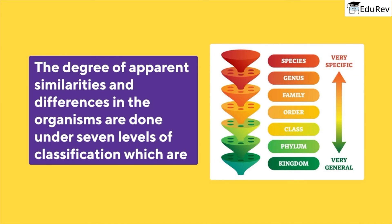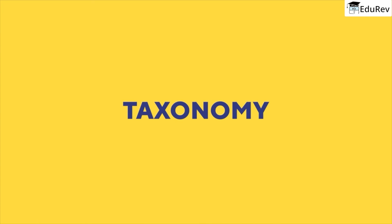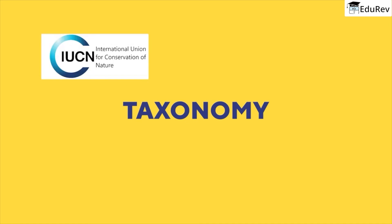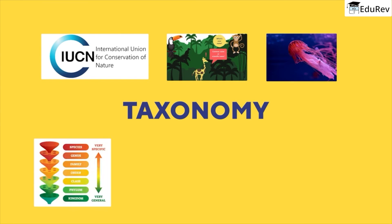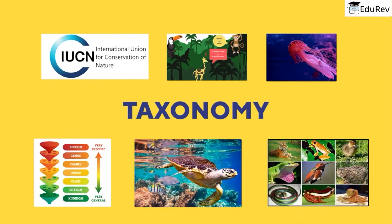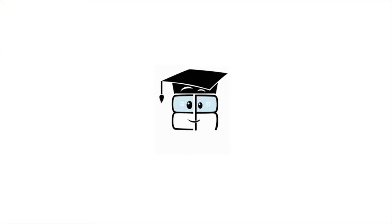With this, we come to an end of our video. Let's recap what all we learned. We started with why we need to study taxonomy. We learned about what we need to study under taxonomy, i.e., identification, nomenclature, and classification. I hope you understood this topic. You can learn more about it in the detailed chapter notes and attempt the respective tests on EduRift to cross-check your understanding.